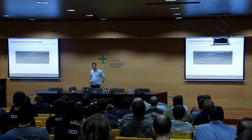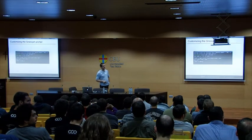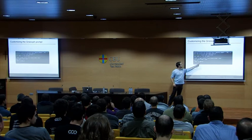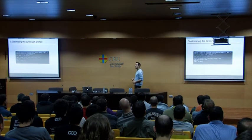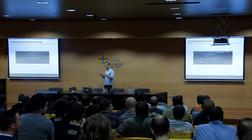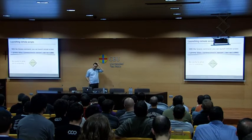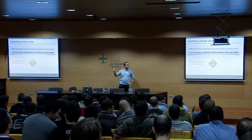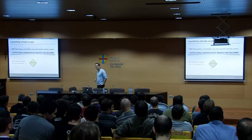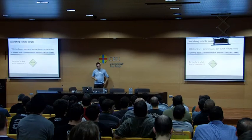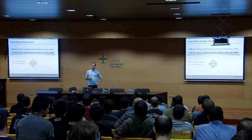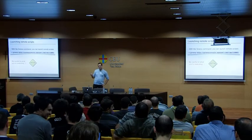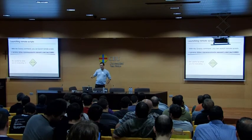In Groovy 1.8.3 you can customize the Groovy shell prompt — instead of "groovy:000>" you can set a custom prompt. On macOS it works with Unicode characters, so you can have an "I ♥ Groovy" kind of prompt. Also, you can now execute remote scripts hosted on the web using Groovy with a URL — though be careful, because if you don't trust the remote script it could do something harmful like "rm -rf".